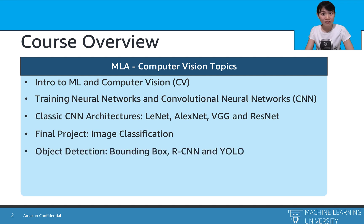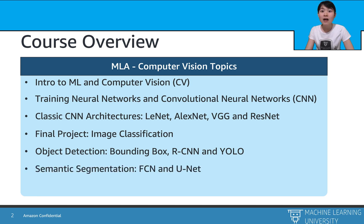Besides image classification, we will also explore two other downstream tasks in the computer vision domain: object detection and semantic segmentation. For object detection, we will talk about bounding boxes, the R-CNN algorithms, and the YOLO algorithm. For semantic segmentation, we will learn the FCN model and UNet, which are two powerful algorithms to segment object instances from an image.